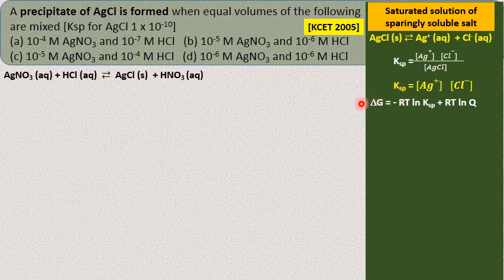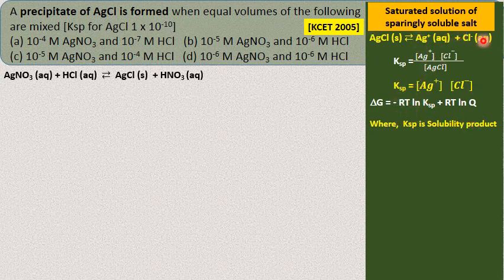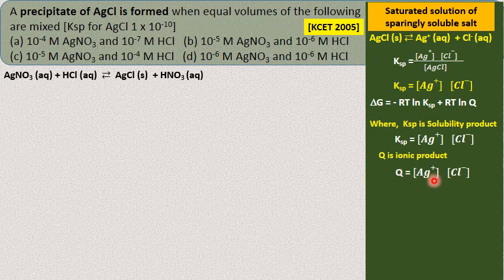This is related to free energy change as: ΔG = −RT ln Ksp + RT ln Q. Ksp is the solubility product — an equilibrium constant equal to the concentrations of Ag⁺ and Cl⁻ at equilibrium. Q is called the ionic product, which is the product of the ion concentrations at a given time.